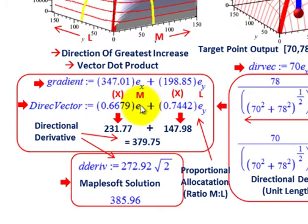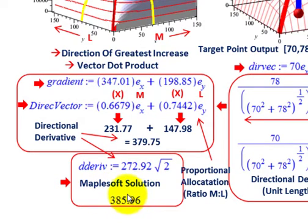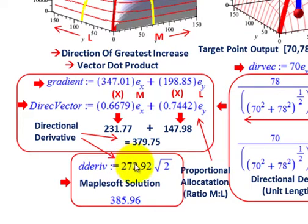Based on our targeted point for our material input and our labor input, this is what we're increasing our output by at that point. We could have gone through all this mechanics or just put in a simple command in Maplesoft, which — based on our function and our inputs — gives a directional derivative of 272.92 times the square root of 2, coming out to 385.96. That compares to what my multiplication gave: 379 versus 385 — I just didn't carry out enough decimal points. But you really need a software package to put this all in. That's what they call the vector dot product, and that gave us our directional derivative amount.